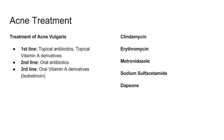The second subtopic is acne, caused by the bacteria Propionibacterium. Treatment involves three lines. The first line is topical antibiotics or topical vitamin A derivatives. Second line is oral antibiotics if topical fails. Third line is oral vitamin A derivatives. The antibiotics used in acne include clindamycin, erythromycin, metronidazole, sodium sulfacetamide, and dapsone. The highest yield to know are clindamycin, erythromycin, and metronidazole — these are the main topical antibiotics for acne.